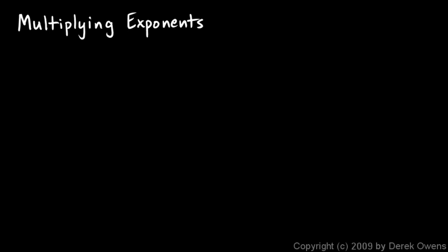Now we're going to talk about multiplying exponents, and we'll start off by explaining multiplying exponents with the same base. So problems like this: a squared times a cubed — notice both of these are base a, so we're multiplying exponents with the same base.